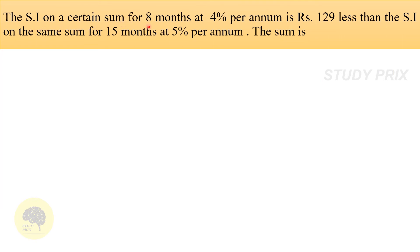Next question: The simple interest on a certain sum for 8 months at 4% per annum is Rs.129 less than the simple interest on the same sum for 15 months at 5% per annum. Find the sum. Write down the data: Case A — time = 8 months = 8/12 = 2/3 years, rate = 4%.